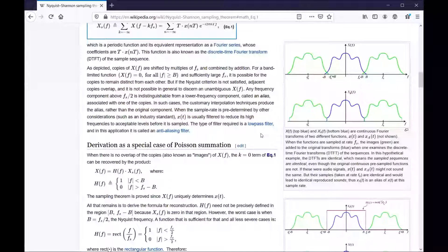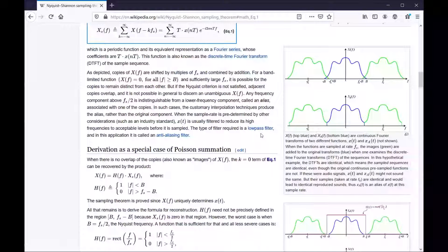So this is going to be the first equation that we read in full in this article. x sub s of f equals the sum from k equals negative infinity to infinity of x times open paren f minus k f sub s close paren equals the sum from n equals negative infinity to infinity of x times n t times e raised to the negative i2 pi n t f power. Okay. I hold a bachelor of science degree in pure math and I cannot parse that equation as it was just spoken.